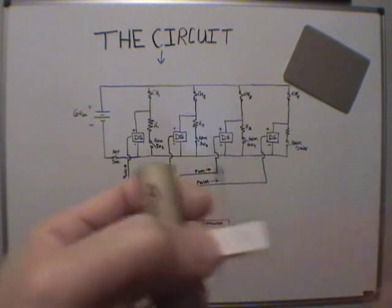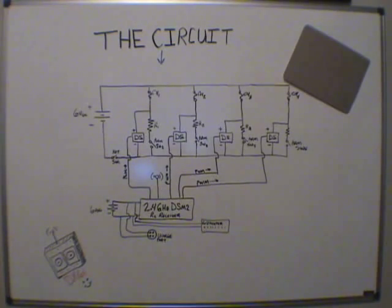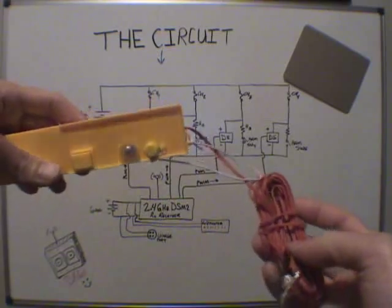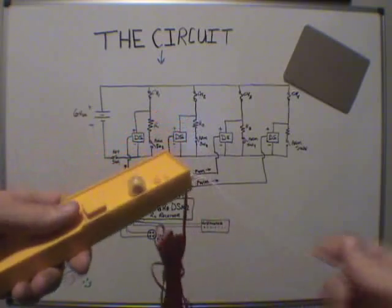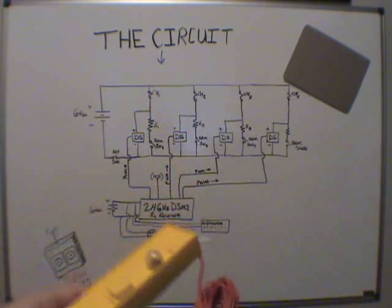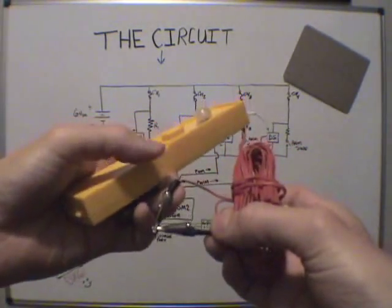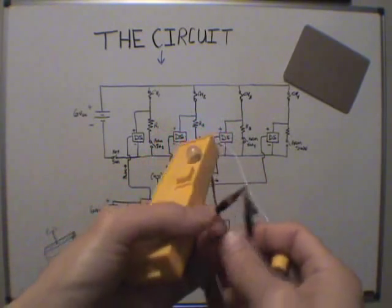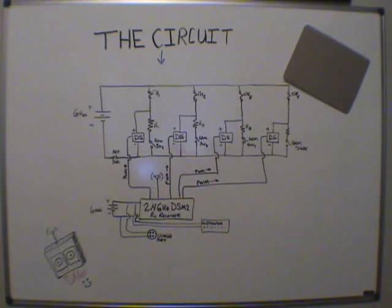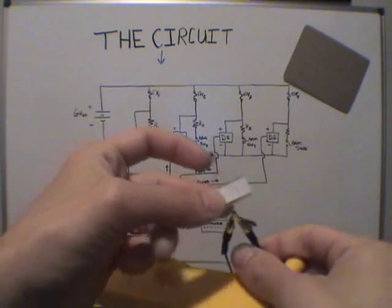So this is the standard suggested launch system by Estes that they retail. It's got four basic double-A batteries inside for a total of 6 volts. It's got a little safety feature here with the key. Just for demonstration purposes I have both of the alligator clips which would actually clip on to that igniter that I showed you.